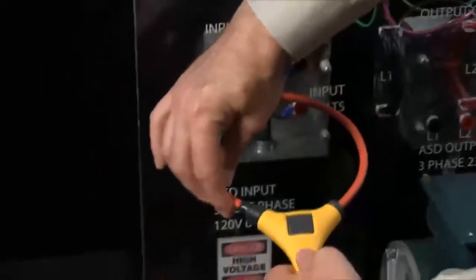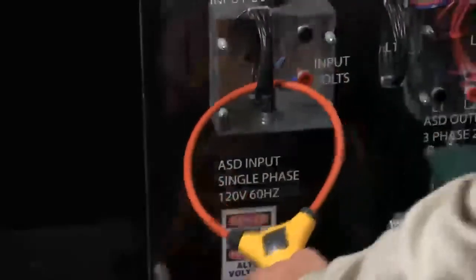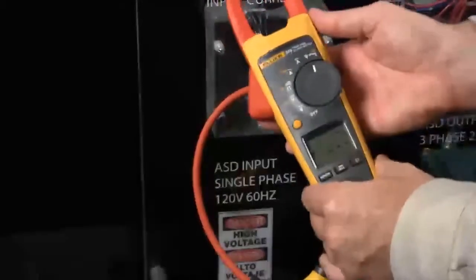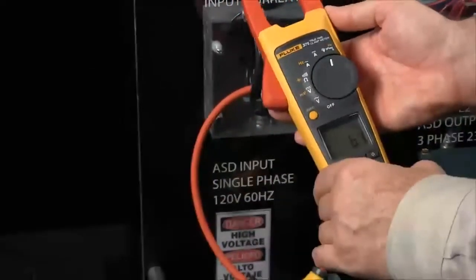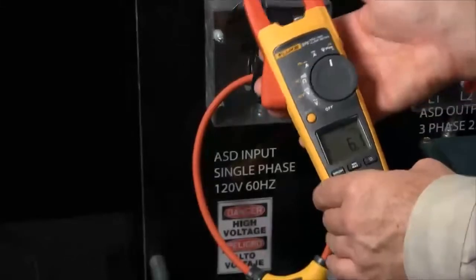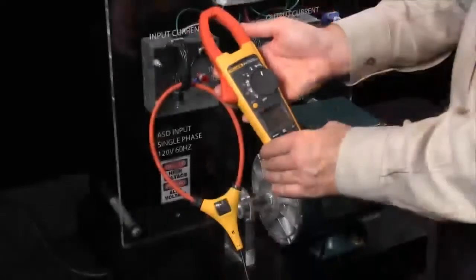Simply loop the iFlex around your conductors and change the setting on your dial to read through your iFlex. You're reading your current through the iFlex as opposed to the molded case.